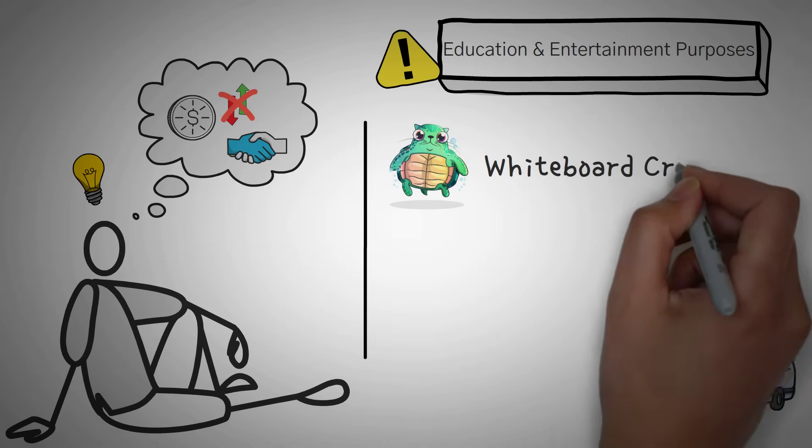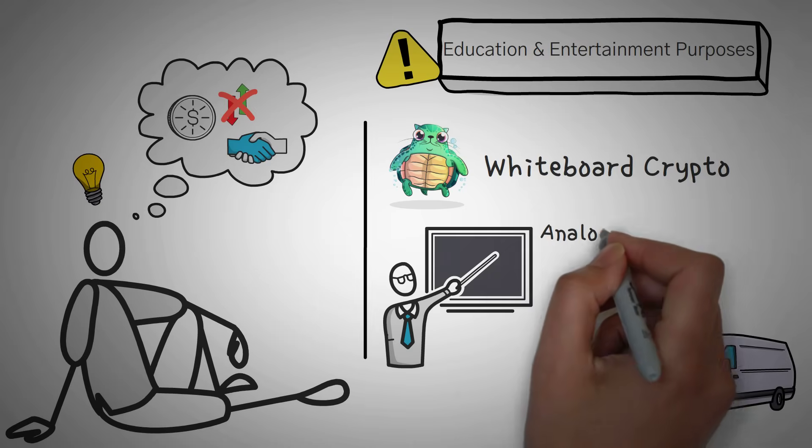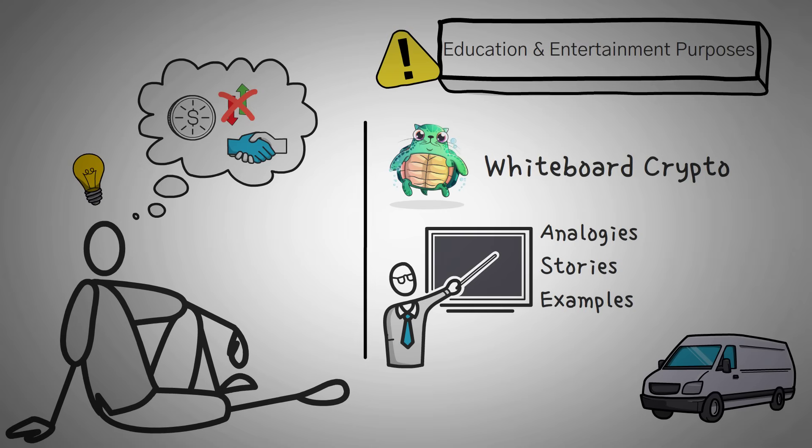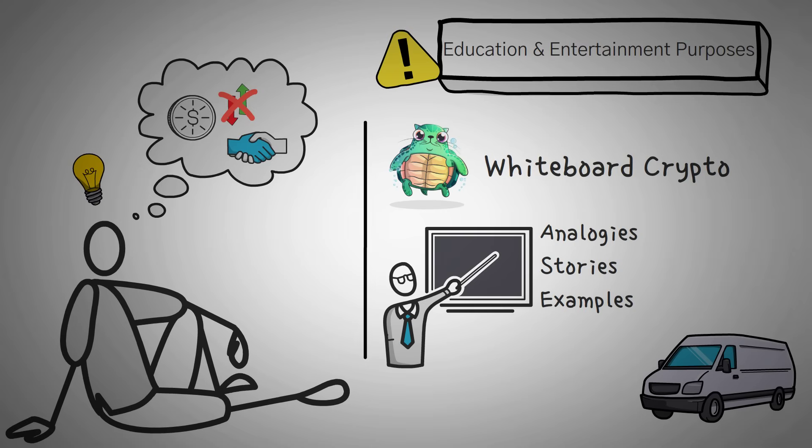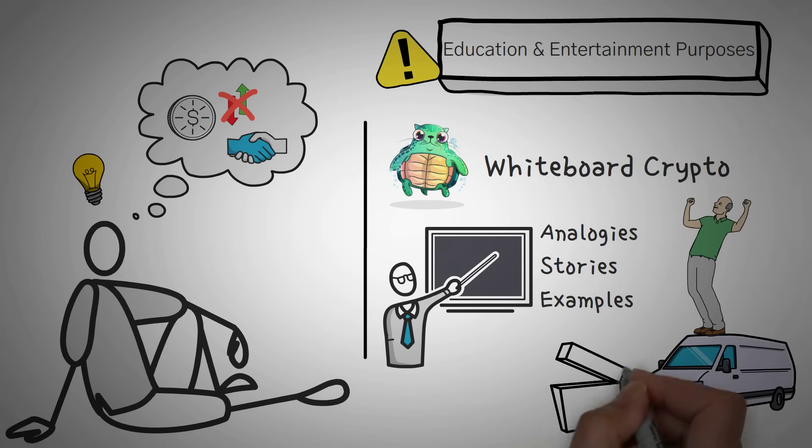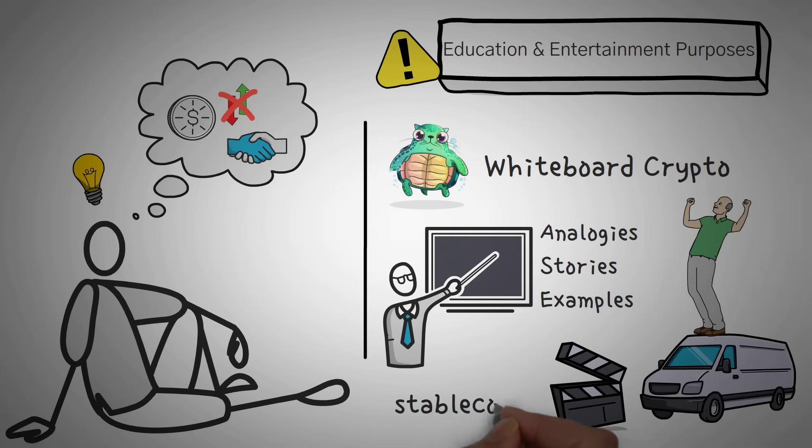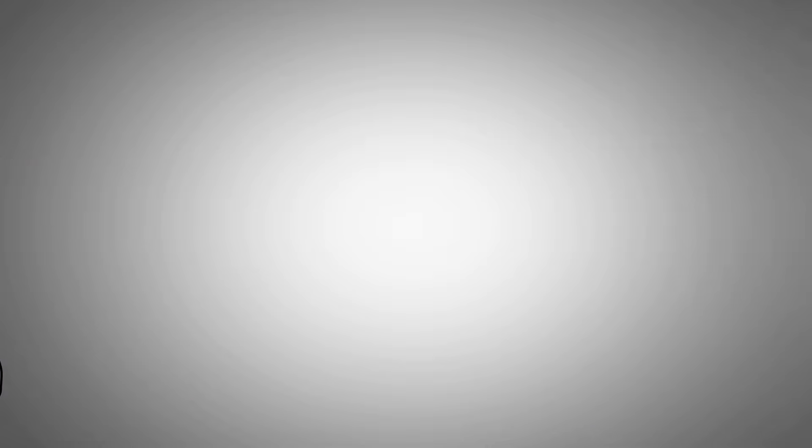Welcome to Whiteboard Crypto, where we explain the topics of cryptocurrency using analogies, stories, and examples so that you can easily understand them. We usually make a joke about it being so simple that your grandparents could understand it, but we're running out of ideas. So today, we want to explain what stablecoins are and how you can best use them to leverage your crypto trades.